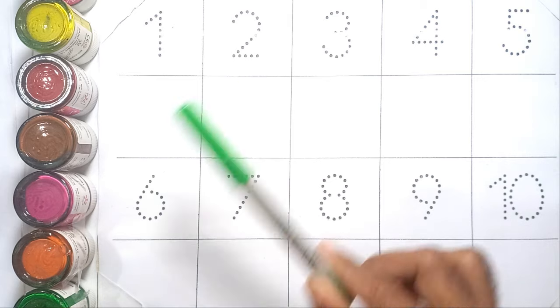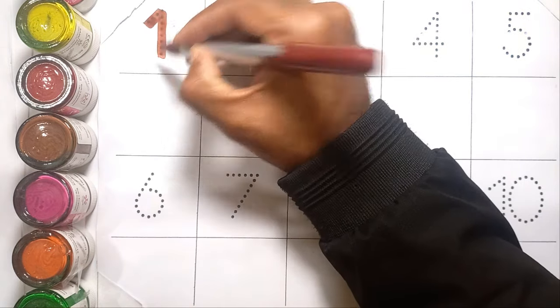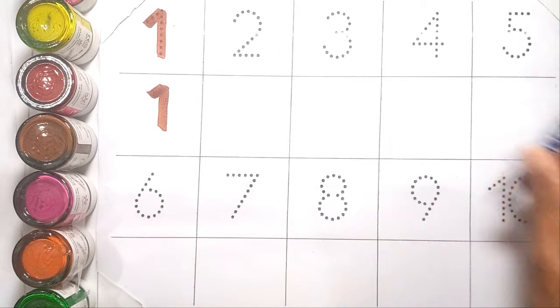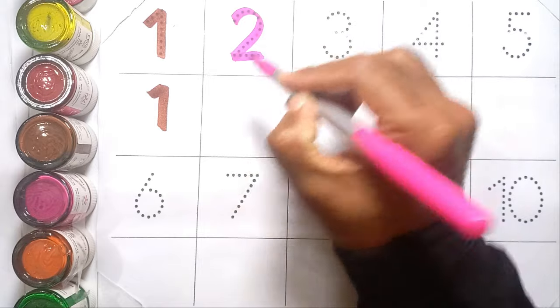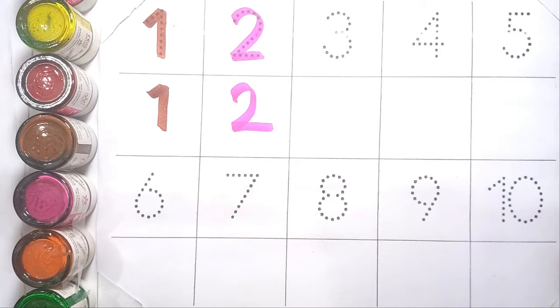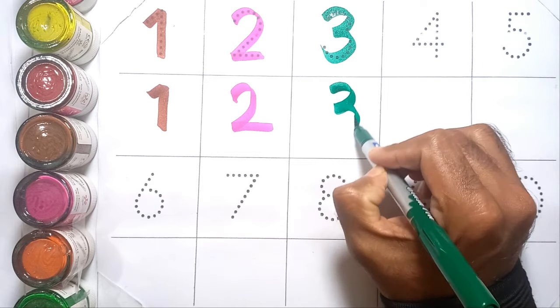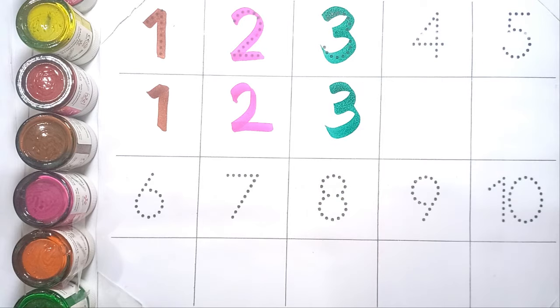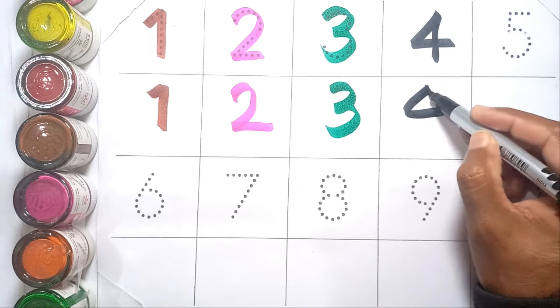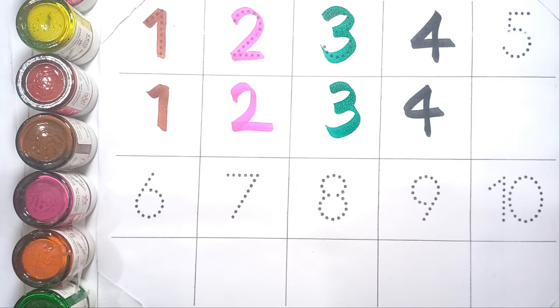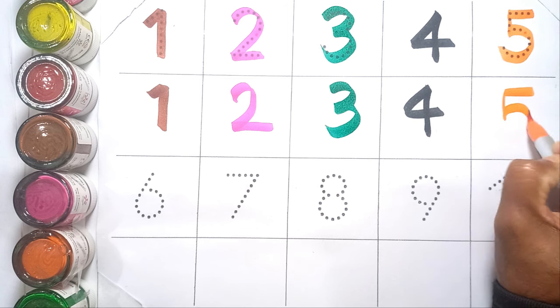Sea green color. One, one. Two, two. Three, three. Four, F-O-U-R, four. Five, F-I-V-E, five.